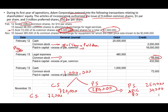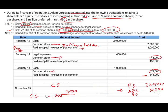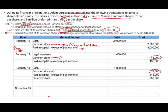So the full entry credits: Common Stock $72,000; Additional Paid-In Capital (common) $648,000; Preferred Stock $250,000; Additional Paid-In Capital (preferred) $30,000 — totaling $1,000,000. The concept is the same for both stock types: credit the stock account for shares times par value, and the remainder is paid-in capital.